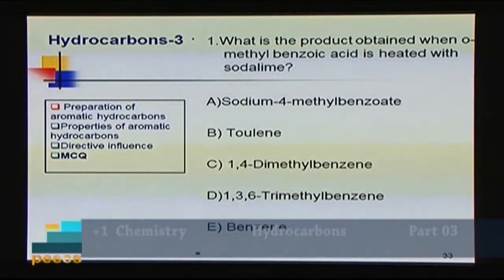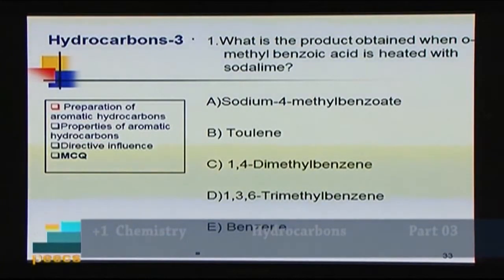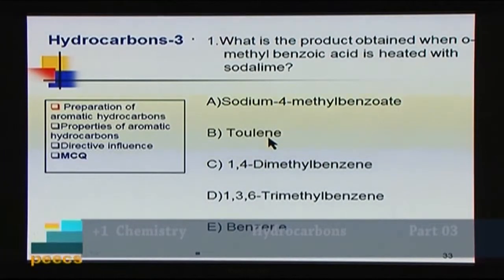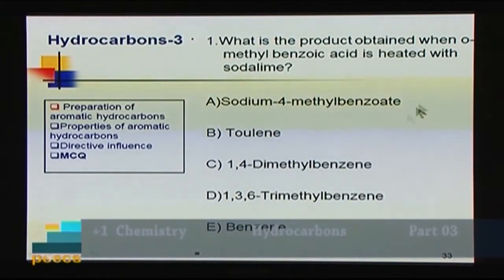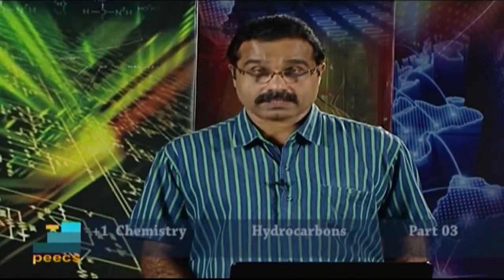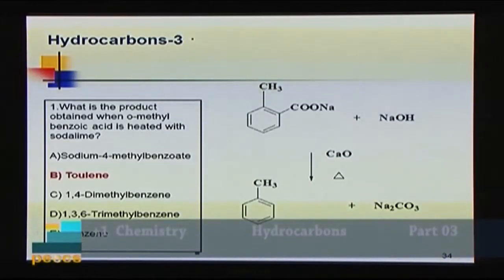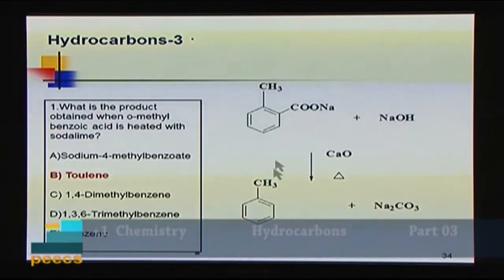Now for multiple choice questions. Question 1: What is the product obtained when 2-methylbenzoic acid (o-methylbenzoic acid) is heated with soda lime? The choices are: A) sodium 4-methylbenzoate, B) toluene, C) 1,4-dimethylbenzene, D) 1,3,6-trimethylbenzene, E) benzene. Since reaction with soda lime is decarboxylation (removing the acid group), 2-methylbenzoic acid gives toluene. The answer is B.